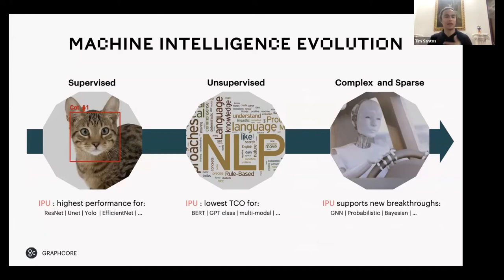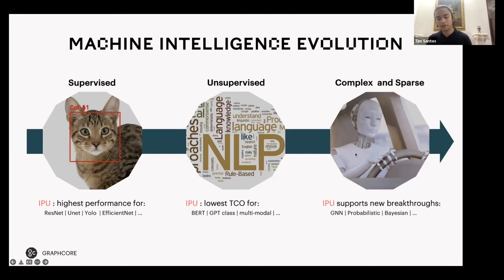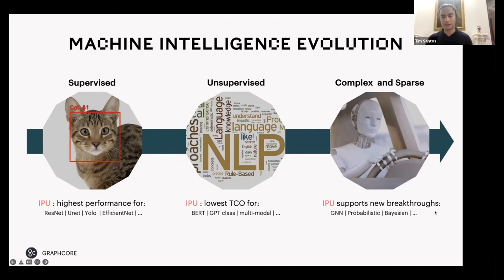Aside from the current state-of-the-art best models in NLP — BERT, GPT — you have ResNets, YOLOs, and EfficientNet available. But what we're really excited about are complex, sparse types of models like probabilistic models, Bayesian models, and graph neural networks. In industries like healthcare and finance, these models are very important. Not plain old NLP models — things like protein synthesis and molecular discovery require new types of models, and that's what we're building towards.